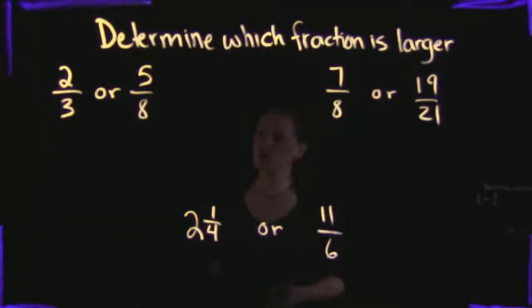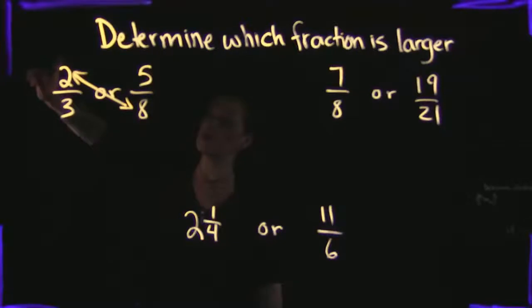So if you're going to use cross-multiplication, what you want to do is you want to essentially make an X with your multiplication. So what I'm going to do to figure out if 2 thirds or 5 eighths is larger, I'm going to multiply across these fractions. The numerator of one times the denominator of the other one. So if I take 2 times 8, this is going to give me 16.